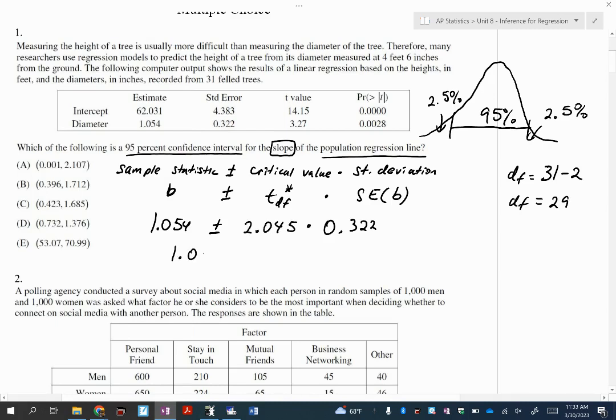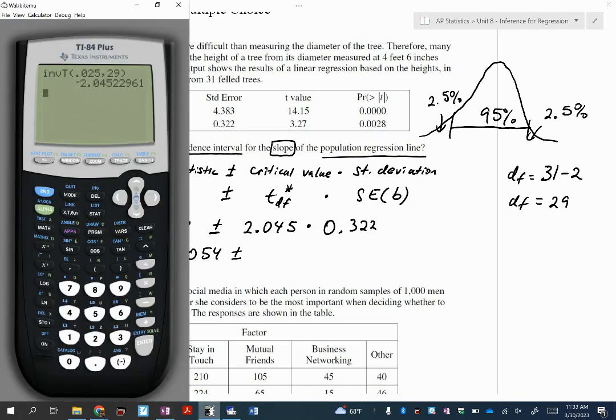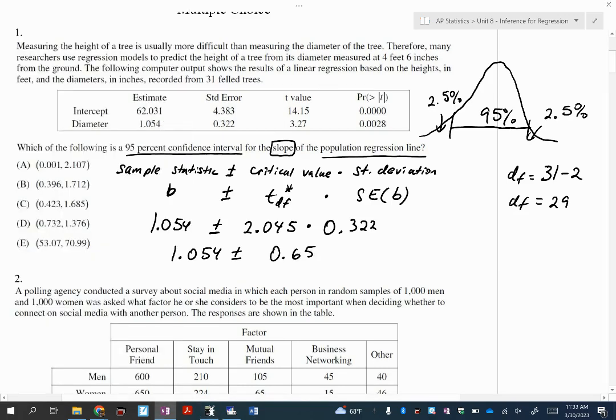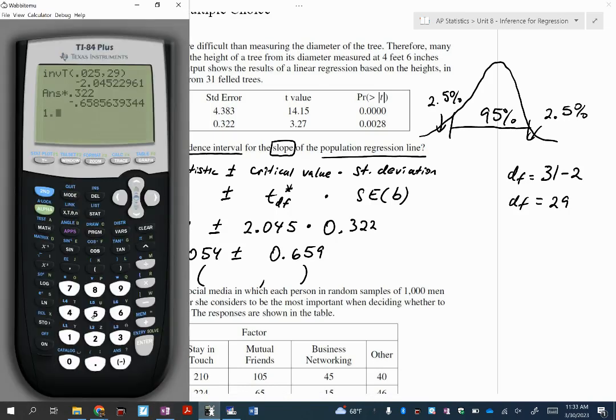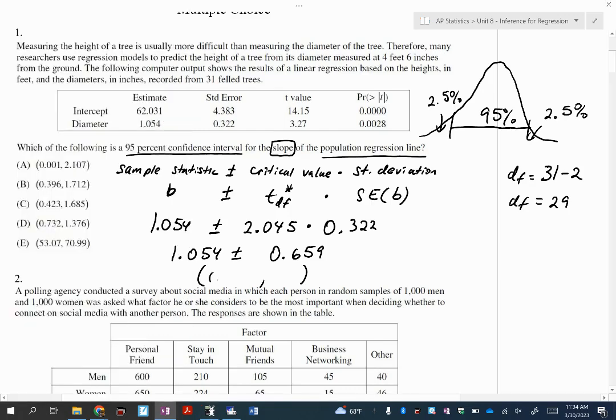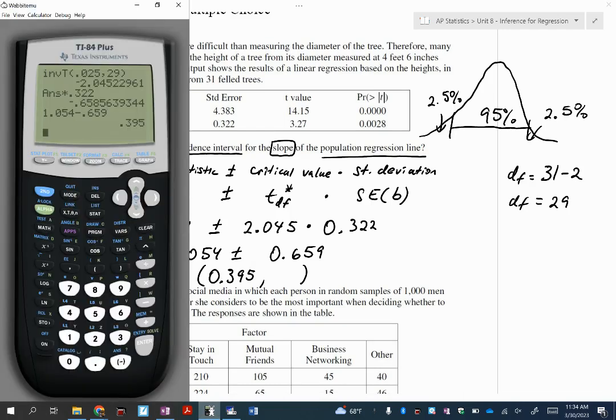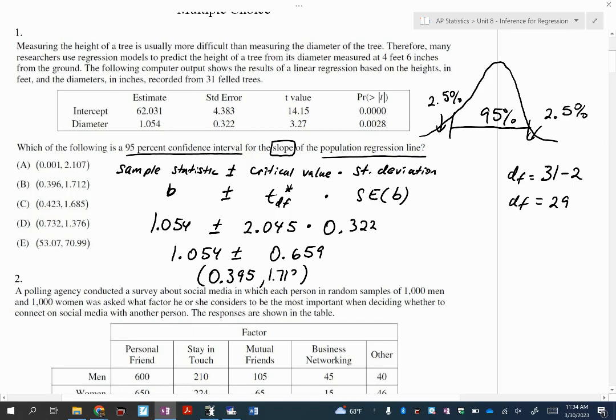So in this case, degrees of freedom is 31 minus two because we have 31 trees, so 29. Hit enter. 2.045. So we do need to multiply those to get the margin of error. So my margin of error is 0.659, and then add and subtract to get your interval.